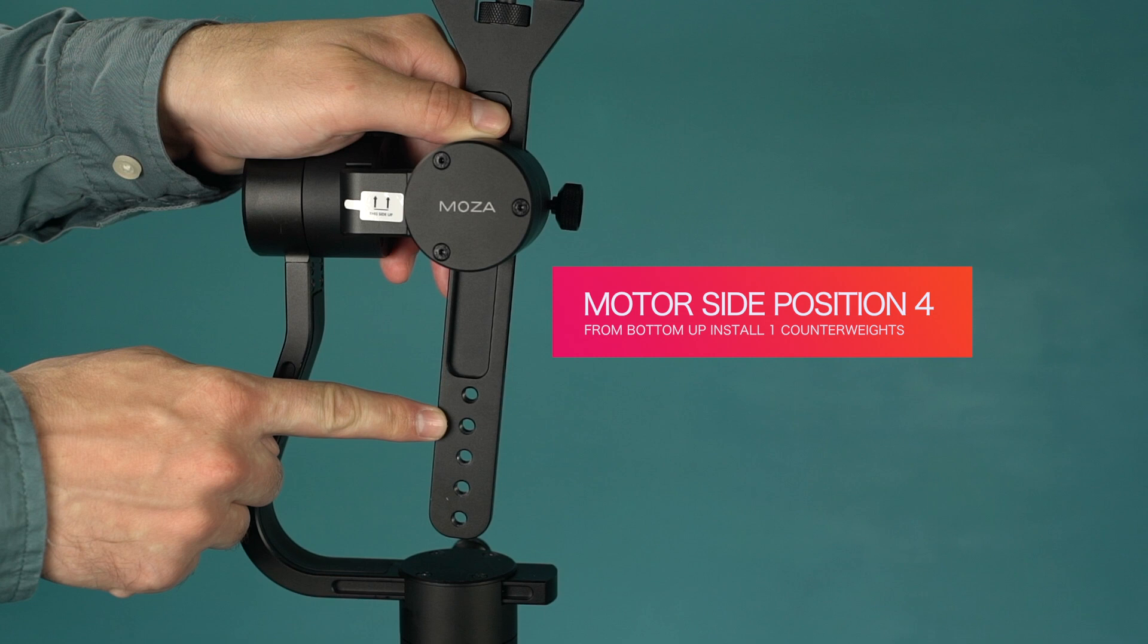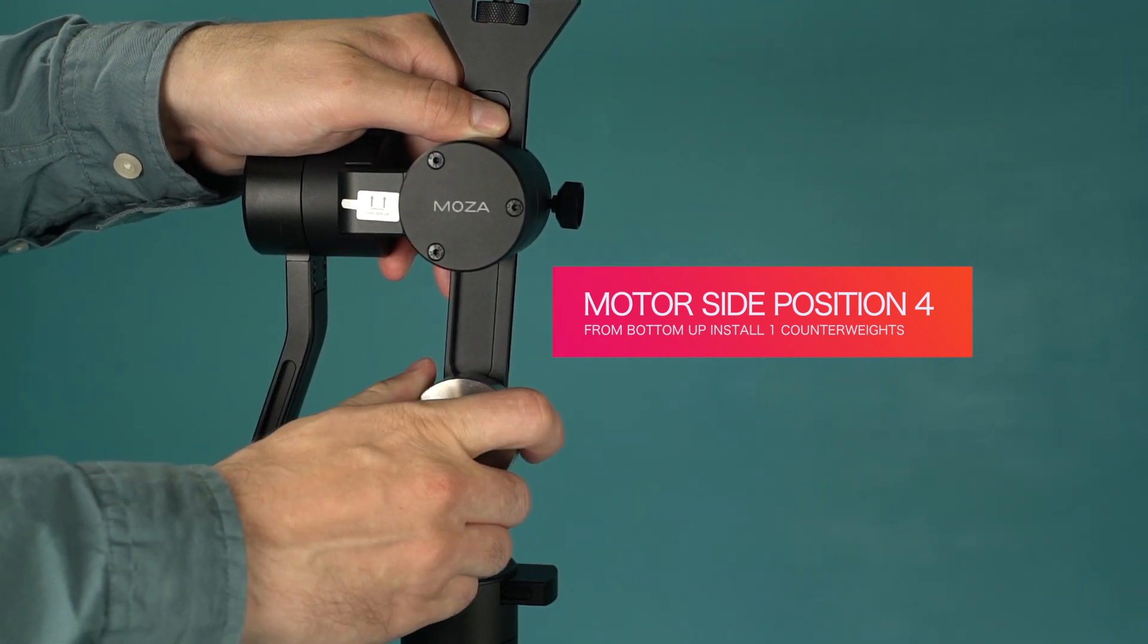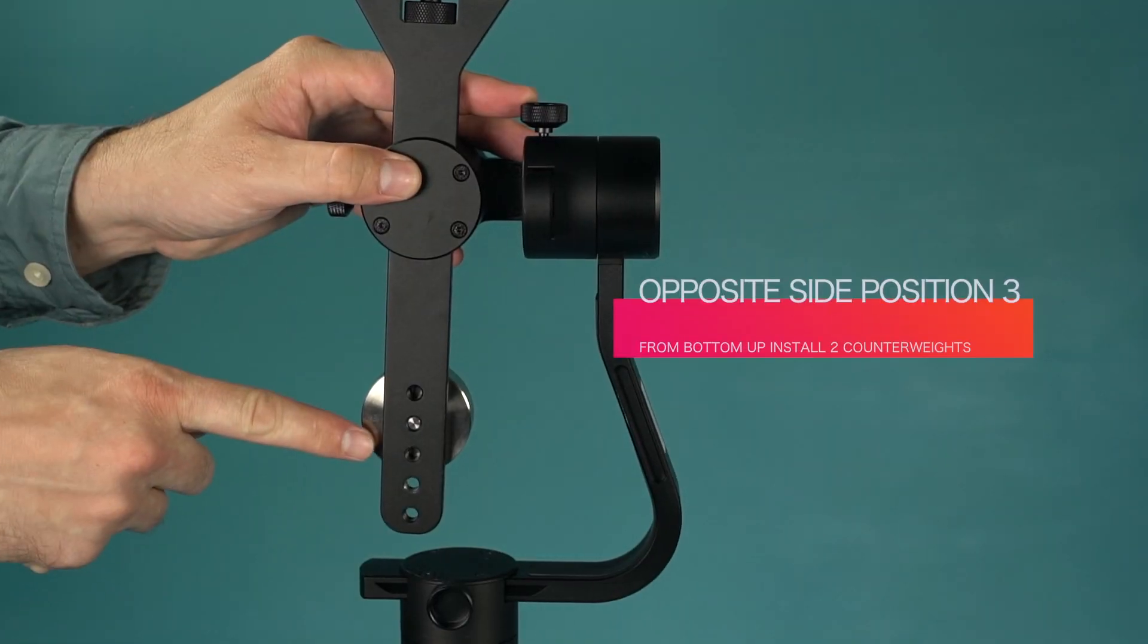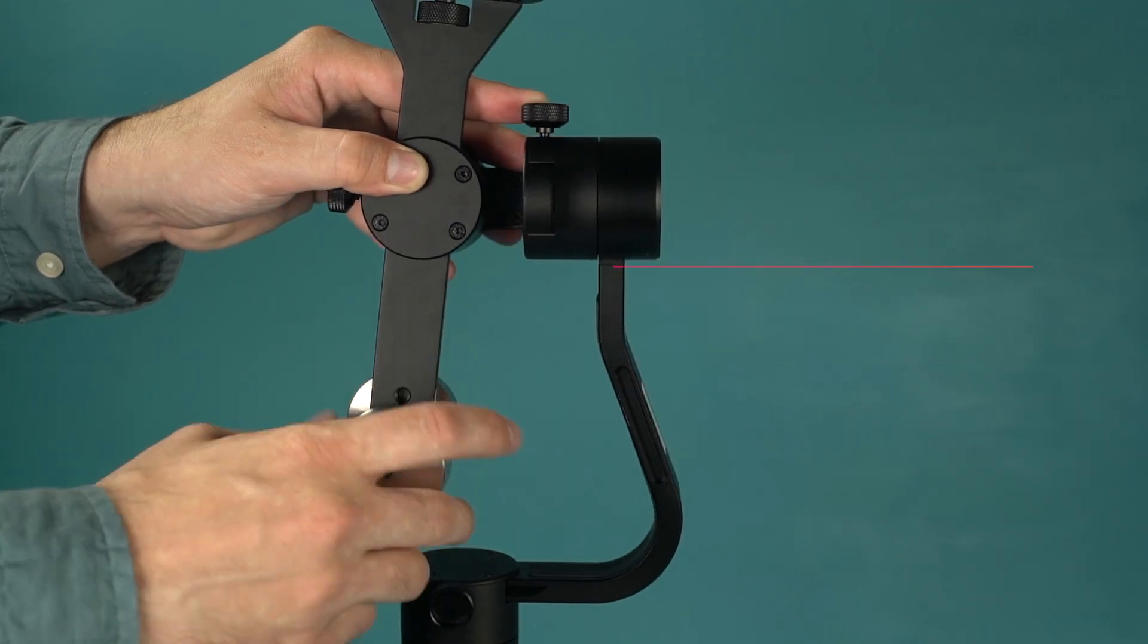On the motor side, on position 4, install 1 counterweight. On the opposite side, in position 3, install 2 counterweights.